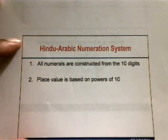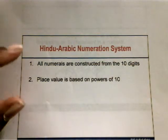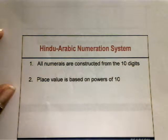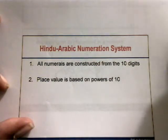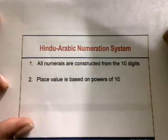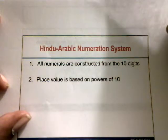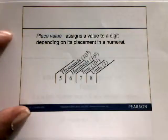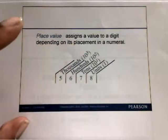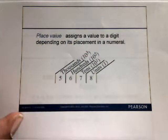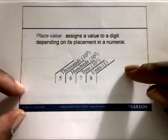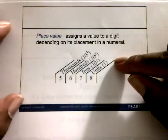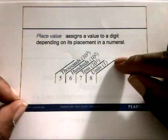First, we'll talk about the Hindu-Arabic numeration system. All numerals are constructed from 10 digits, and place value is based on powers of 10. In this system, place value assigns a value to a digit depending upon its placement in a numeral.